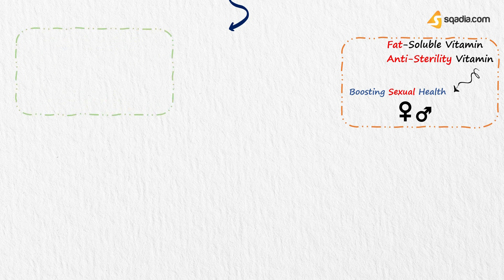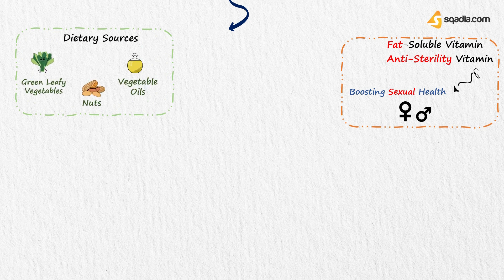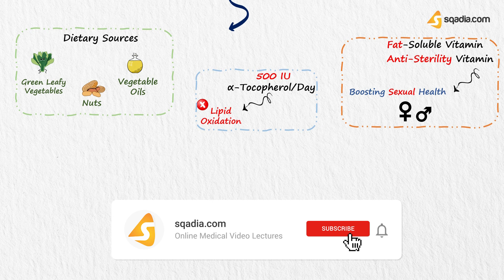Dietary sources of vitamin E are vegetable oils, nuts, and green leafy vegetables. 500 international units of alpha-tocopherol per day can inhibit lipid oxidation in atherosclerotic lesions.